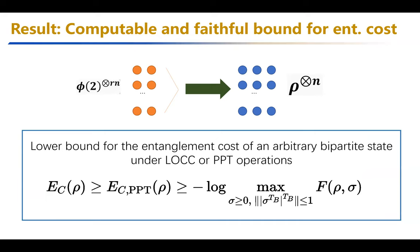So the question is: can we have a computable and faithful estimation for entanglement cost? The answer is yes. We can establish a lower bound for the entanglement cost of an arbitrary bipartite state under either LOCC or even more powerful PPT operations — completely positive, partial-transpose-preserving operations. The bound is simply the logarithmic fidelity of binegativity: you maximize the fidelity between your given state and another state whose partial transpose has been taken and the absolute value computed.